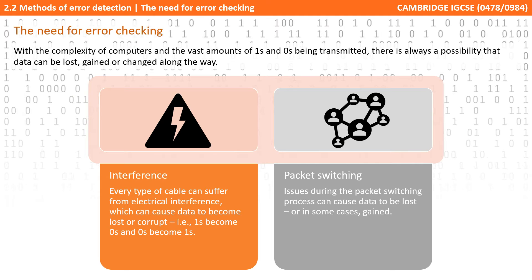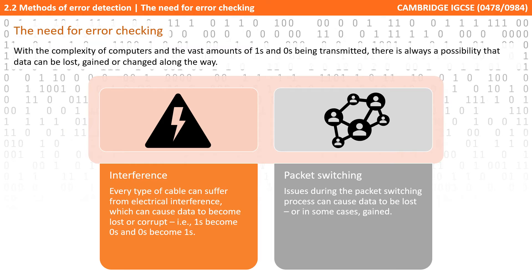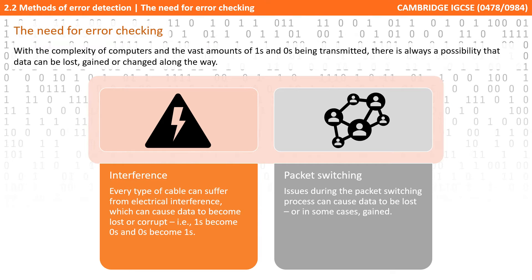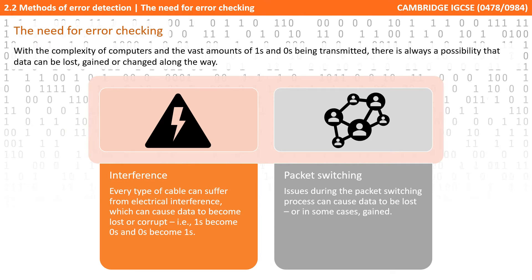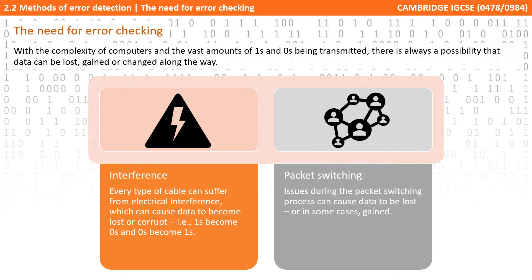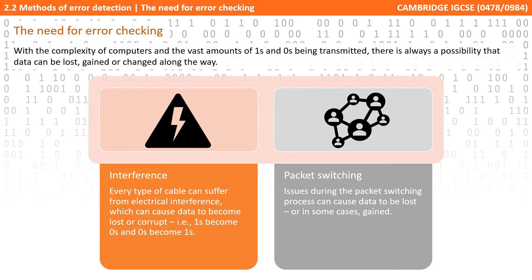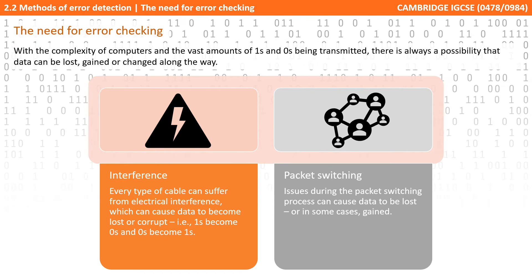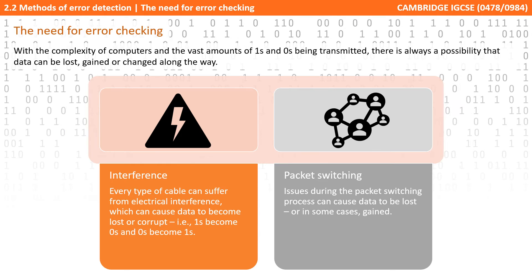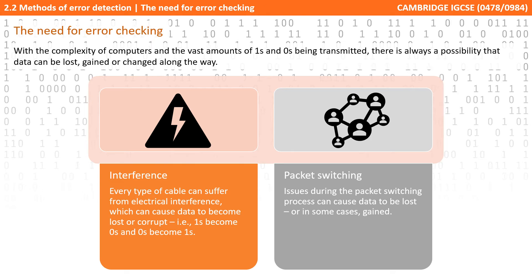There are many ways that errors can crop up in data transmissions. Two of the most common are shown here. Firstly, there's interference — almost all types of cables can suffer from electrical interference, which can cause data to become corrupt. In essence, 1s can become 0s, 0s can become 1s, or individual bits of data can be lost. Also, there's packet switching, where issues can occur during the process which can cause data to be lost or even gained.